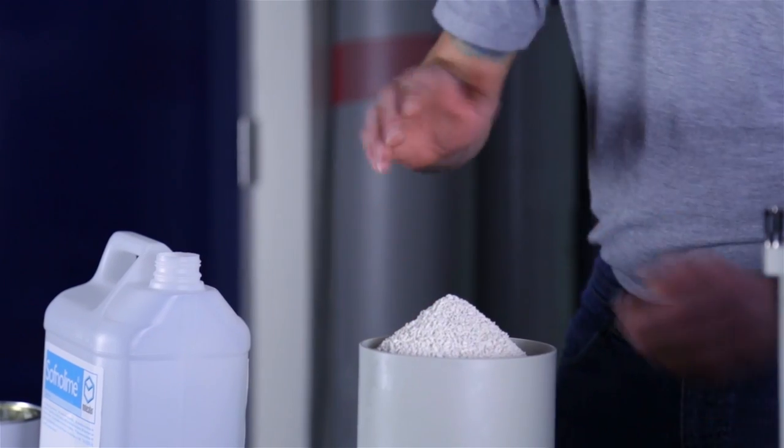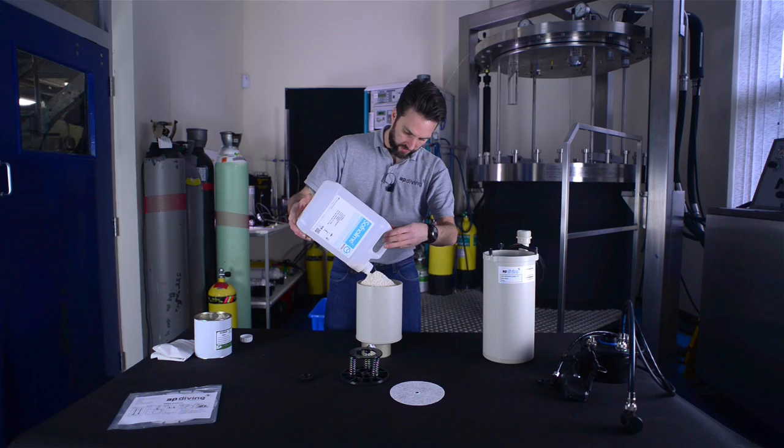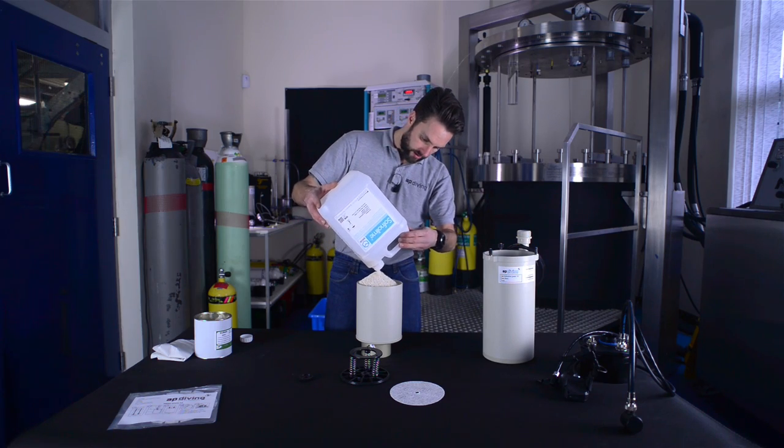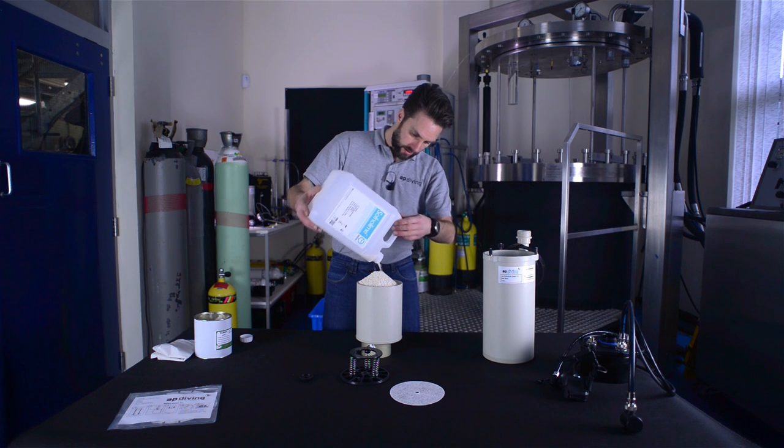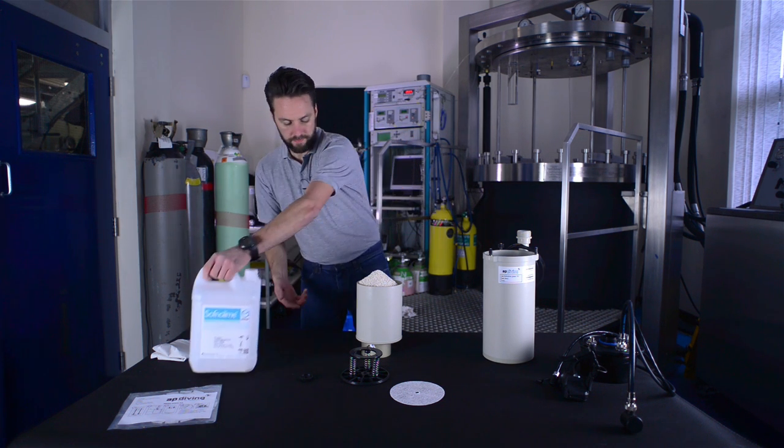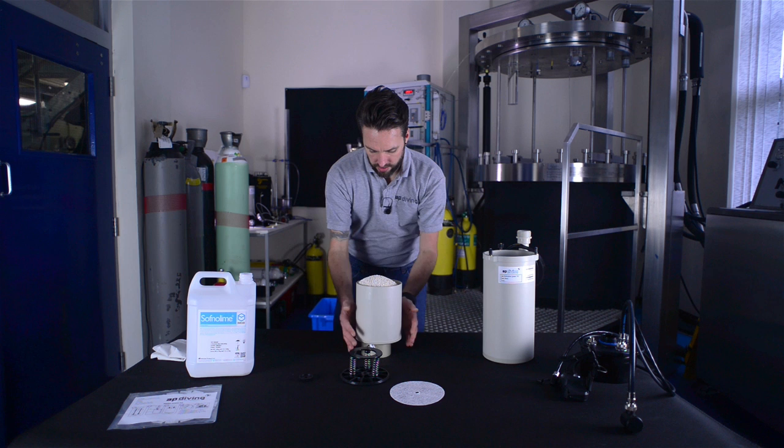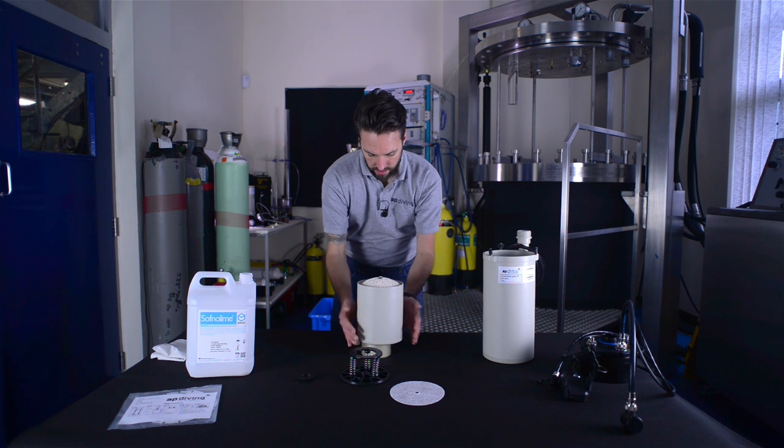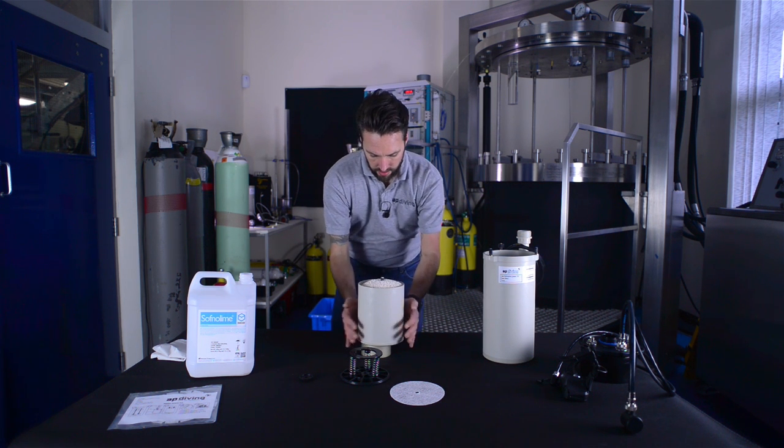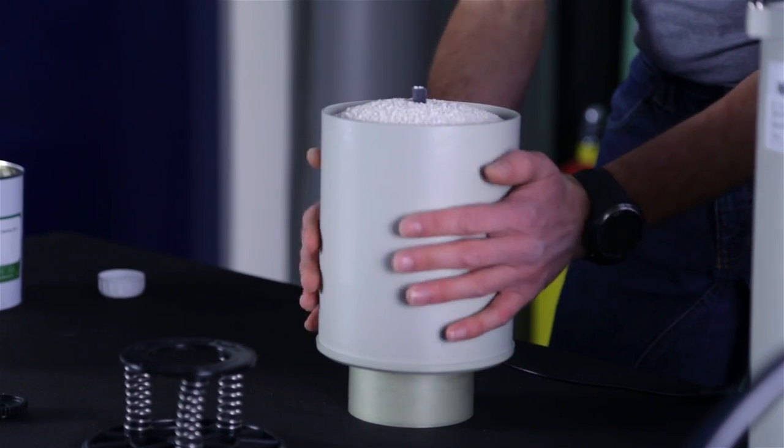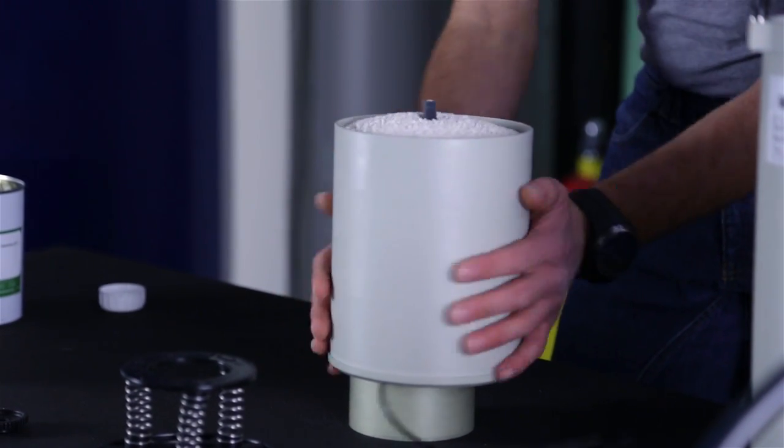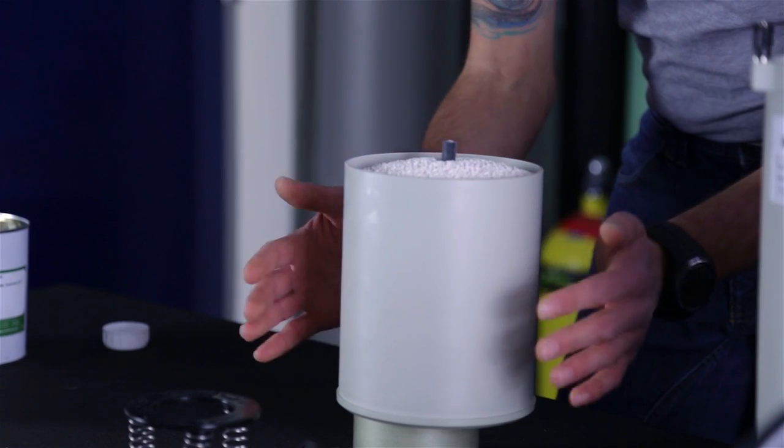I want to have about that much from the top. So that when I level it off and flatten it down, it all fits nicely. Gently tap it, quarter turn, tap it again, quarter turn. Again, I'm not trying to damage the granule, I'm just trying to level off the fill.